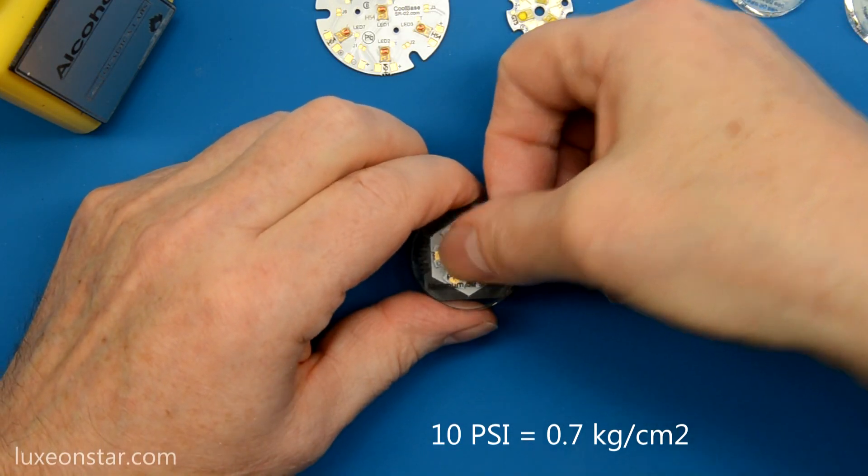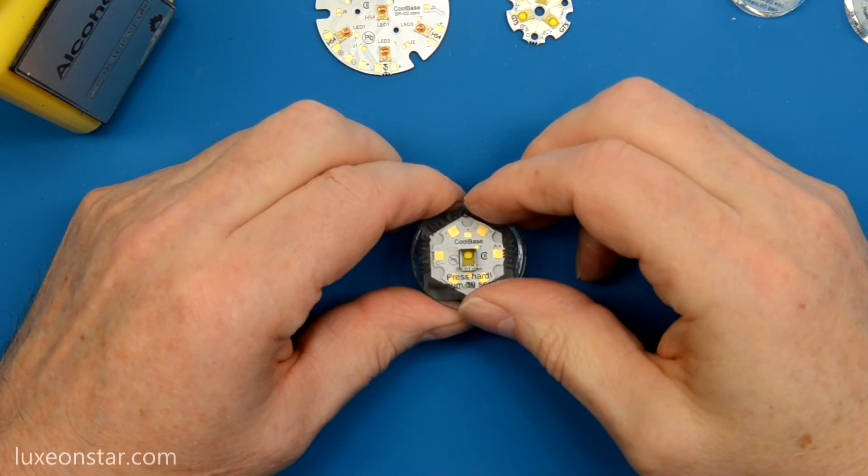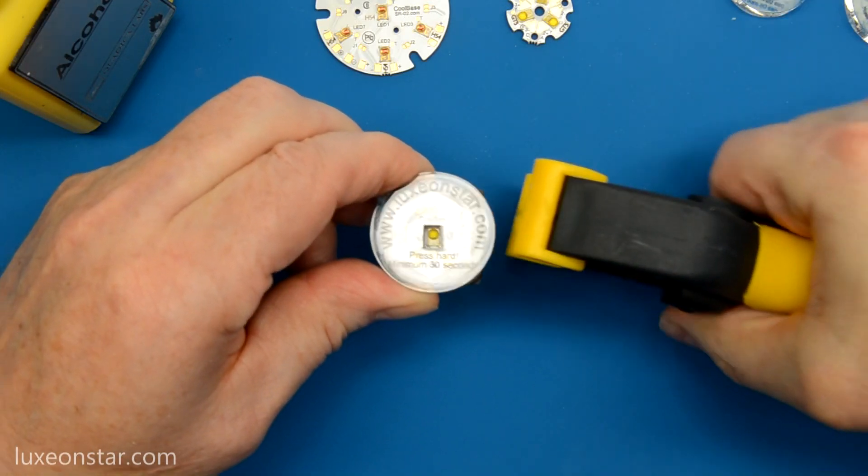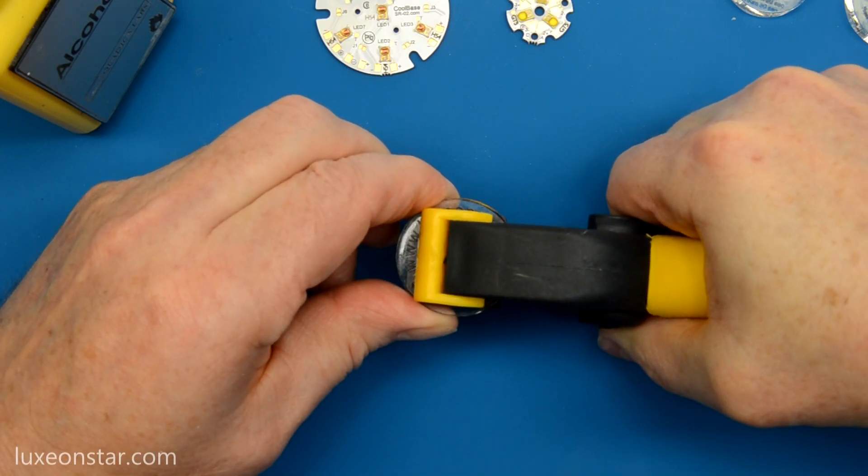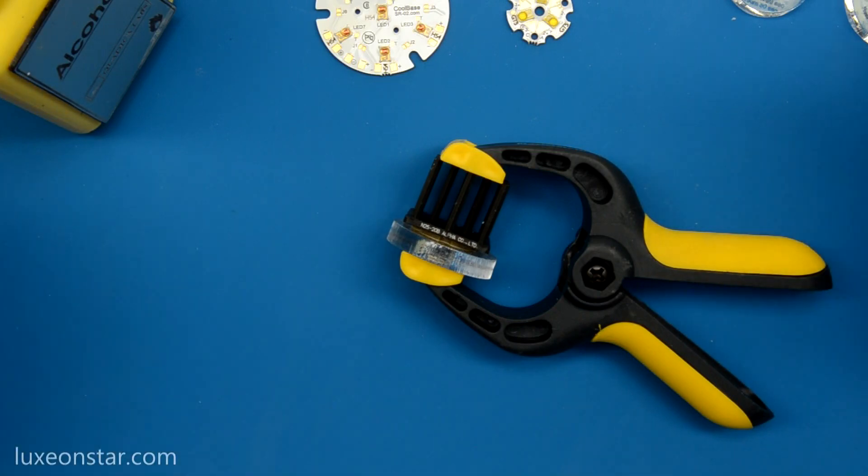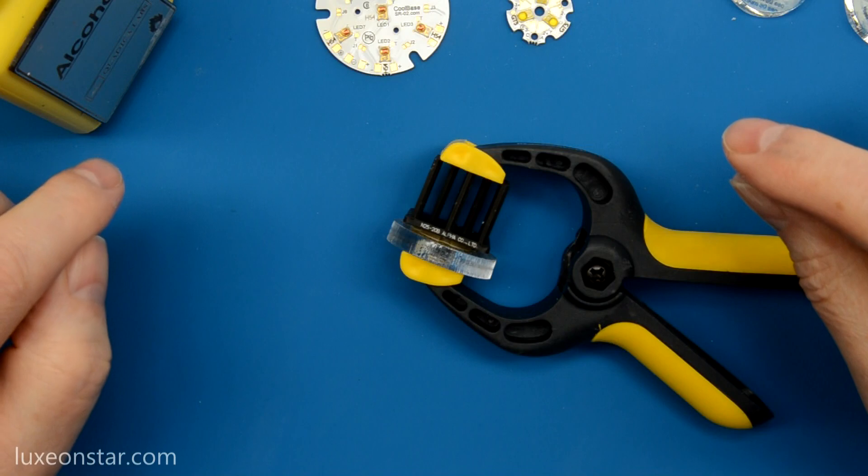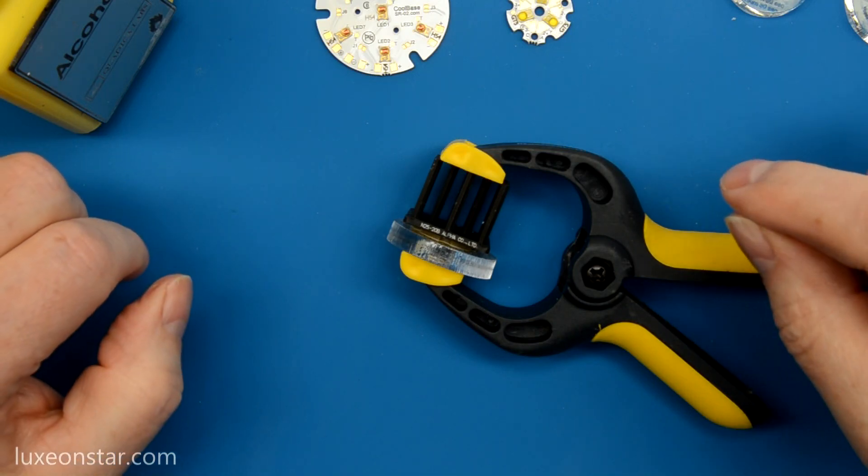There's a number of ways you could do this. You could simply use your hand and push down for 30 seconds. You could put a weight on top or you could use a clamp like what I'm using here. You just clamp it and let it sit for 30 seconds. No matter how you do it, it's extremely important that you apply this pressure for 30 seconds or more to ensure a sound bond.